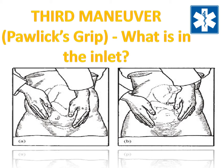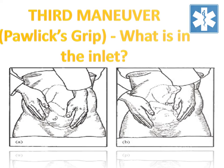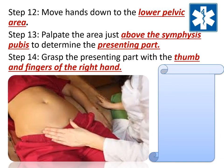For the fourth maneuver — Pelvic Grip: what is the attitude? For good attitude, the brow corresponds to the side that contains the elbows and knees. For poor attitude, the examining fingers will meet an obstruction on the same side as the fetal back.